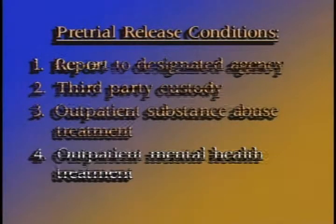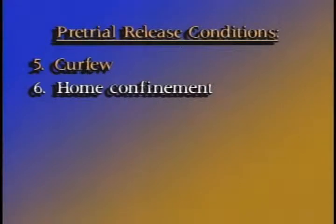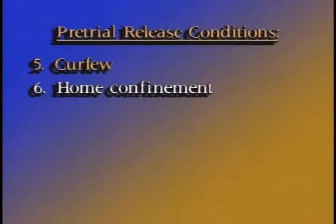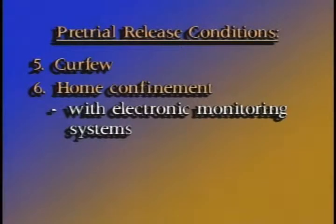Another release condition is to impose a curfew or home confinement. This condition restricts the defendant to a specific location during specified hours. It is often combined with supervision by a third party or pretrial service agency, which can be required to maintain telephone contact with the defendant to ensure that he is where he is supposed to be. Alternatively, you can have compliance supervised by means of electronic monitoring. Home confinement with electronic monitoring monitors a defendant's presence at a location designated by the court. The cost of such monitoring, which is less than $10 per day in most areas, can be imposed on the defendant or paid for by federal funds.